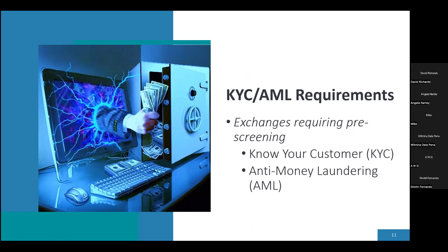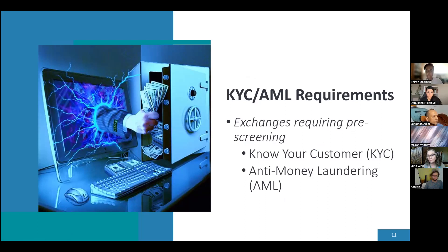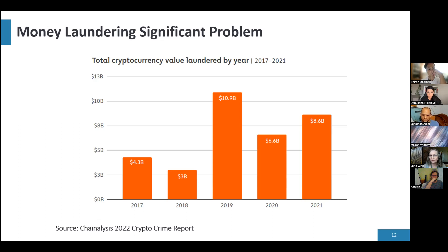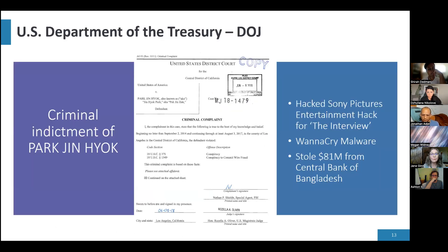It's evident to anyone participating in the crypto community how important KYC and AML requirements are — every time you try to set up an account on an exchange you go through the know-your-customer process. The reason we're all subjected to these requirements now is because we're seeing so much money laundering in the ecosystem. This is a graph from the Chainalysis Crypto Crime Report showing how much cryptocurrency value was laundered from 2017 to 2021 — we're dealing with very large numbers.